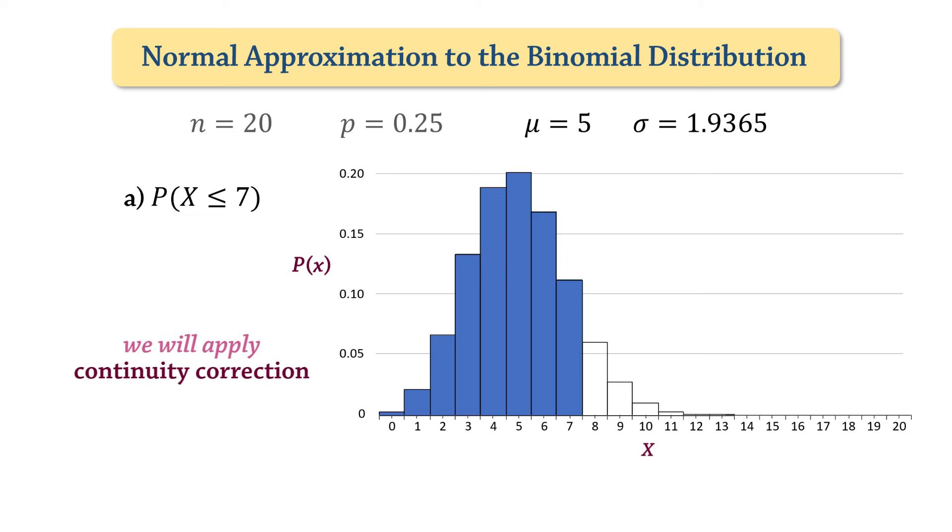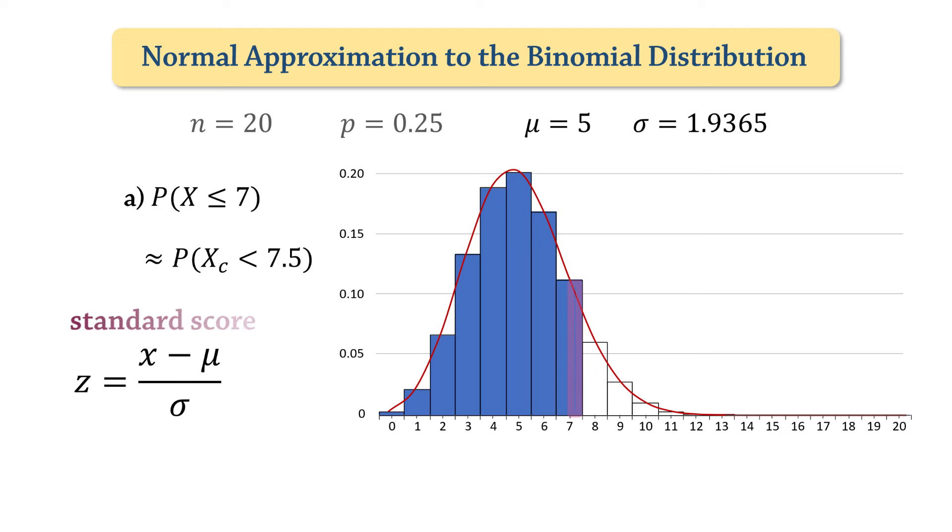That is, we will be calculating the area under the corresponding normal curve up to this point, which is 7.5. If we calculate the area only up to 7, we will be excluding the second half of the x equals 7 bar, and thereby underestimating the required area. We will be transforming the x values to standard normal scores using the formula z equals x minus mu over sigma.